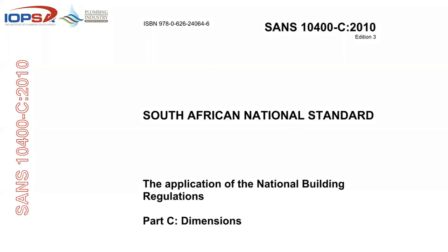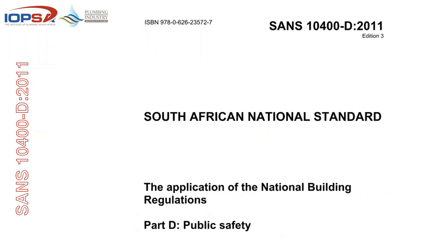Part C deals with dimensions — minimum sizes, minimum head heights, openings, clear space, and various aspects of buildings pertaining to dimensions that designers and building control officers have to comply with. Part D covers public safety, also very important when it comes to design — changes of levels, ramps — making sure the buildings we work on and hand over to the client are indeed safe to be used without any hazard.